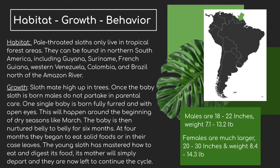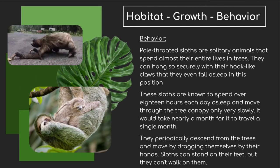An interesting fact is that males are much smaller than females. Females grow up to 30 inches and weigh a lot more than males. Pale-throated sloths are actually very solitary animals. Since they live so high up, they usually just focus on themselves. They can hang securely while they sleep because of their claws — they look like hooks, so they just hook onto a tree and fall asleep. It is estimated that sloths spend about 18 hours each day asleep and move very slowly. It would take nearly a month for one to travel a single mile. They sometimes come down from the trees to use the restroom or drink water — they can actually stand on their feet, but they can't walk on them.